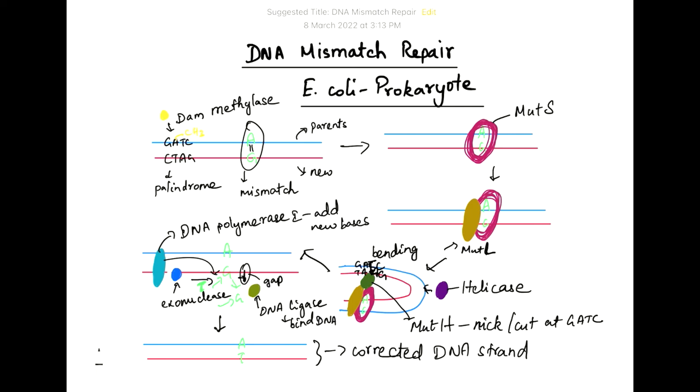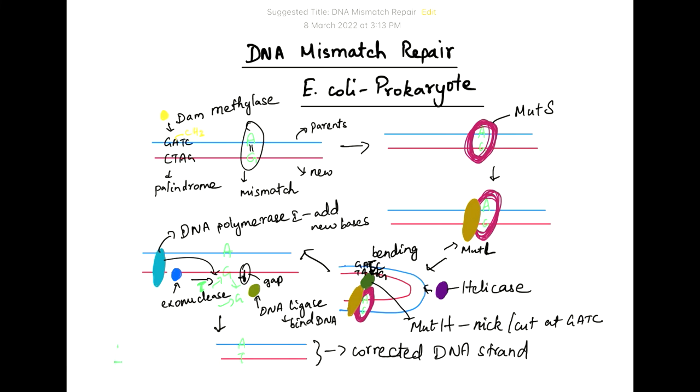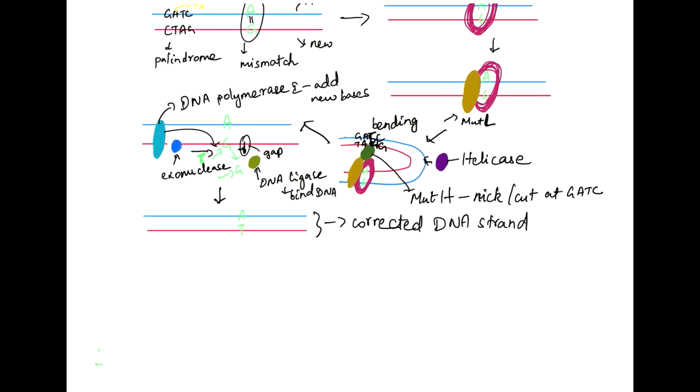So thus in today's topic, we saw how the DNA mismatch repair happens in E. coli. We found that MUT-S protein is first recruited, which is followed by recruiting MUT-L protein and MUT-H protein. And the MUT-H protein will cleave the mismatch in the new strand.